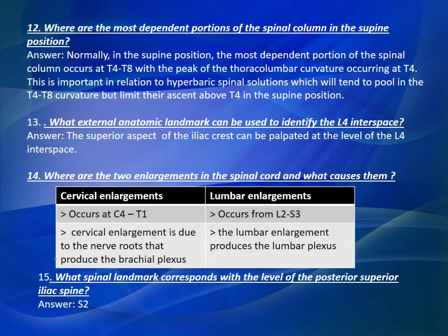Question Number 14: Where are the two enlargements in the spinal cord and what causes them? Answer: The two enlargements are cervical and lumbar. Cervical enlargement occurs at the level of C4 to T1 and is due to the nerve roots that produce the brachial plexus. The lumbar enlargement occurs at the level of L2 to S3 and produces the lumbar plexus.